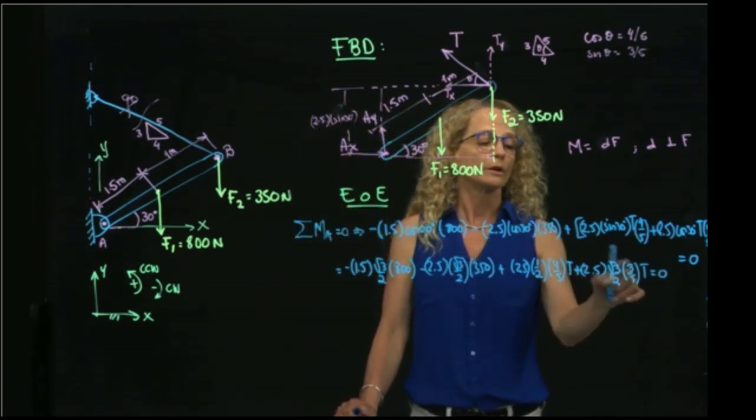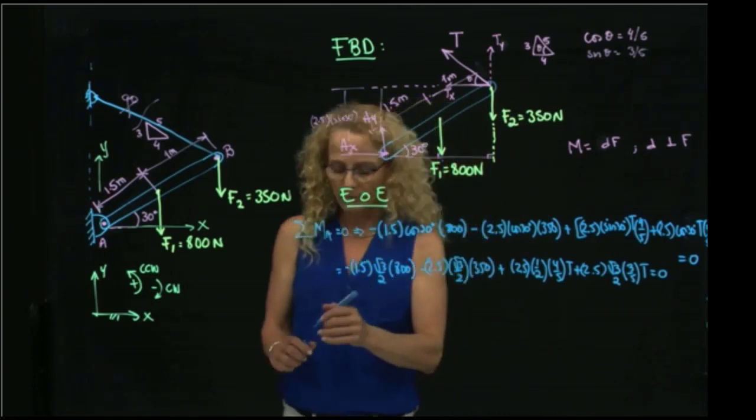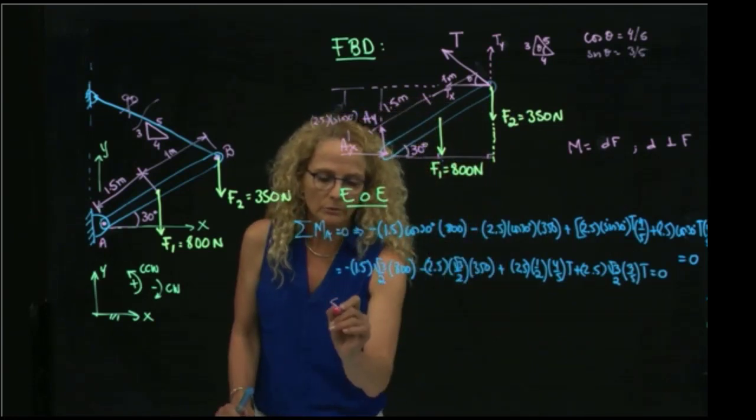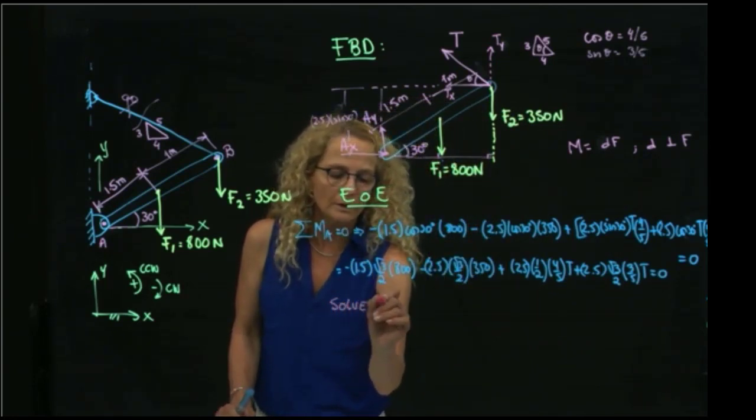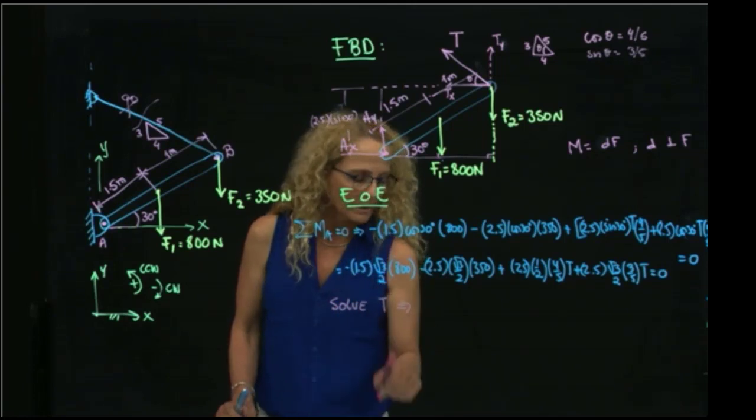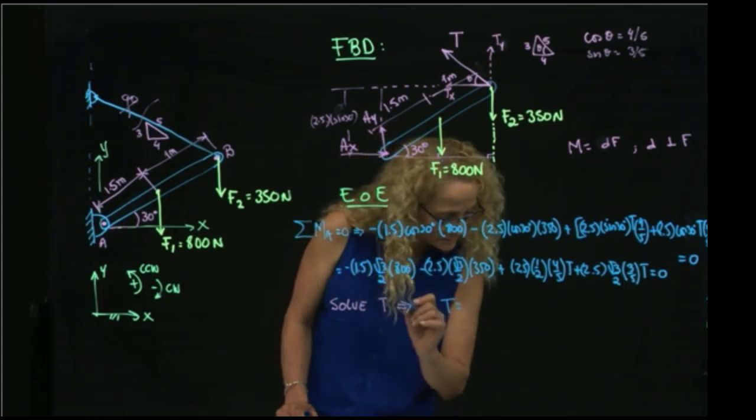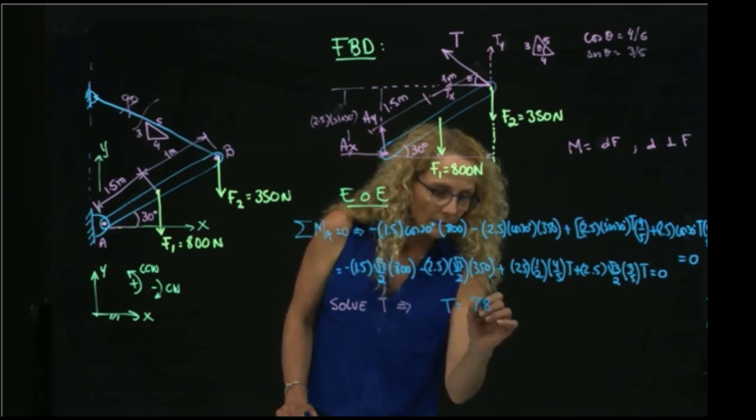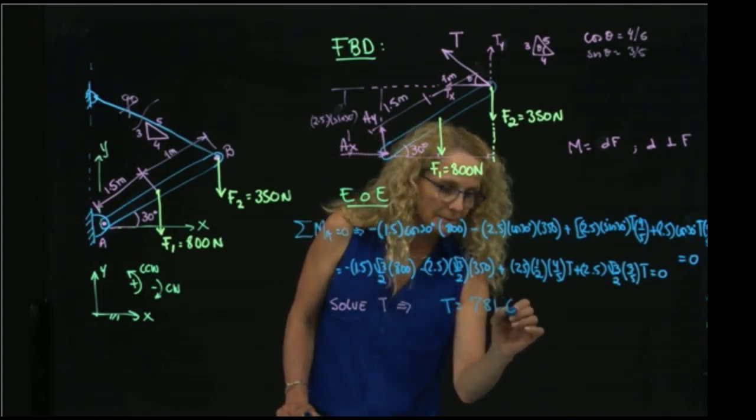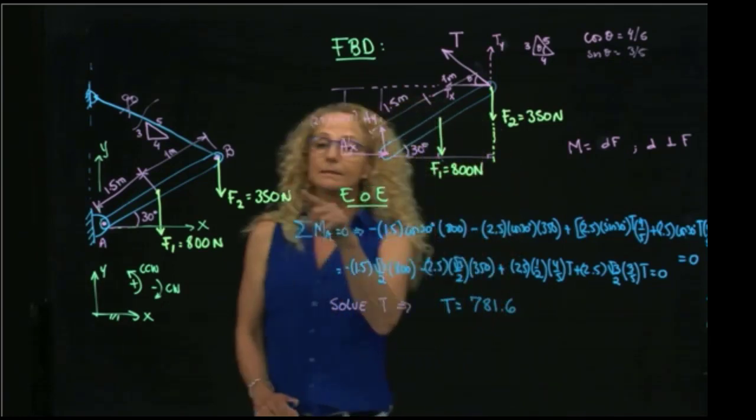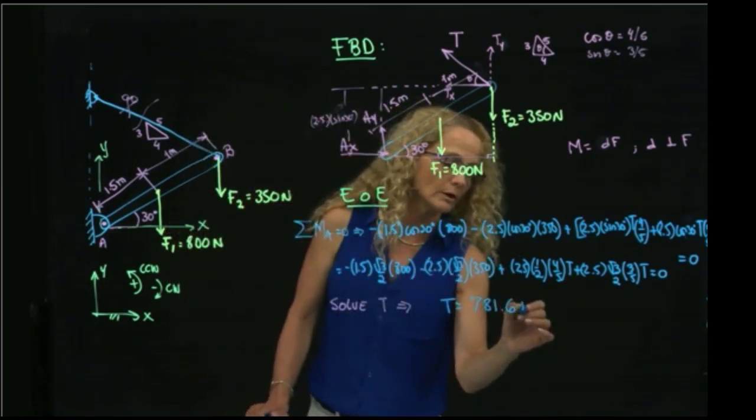My only unknown is the tension, so I can actually pull out the tension right here and solve for the tension. So I'm going to do that, solve for T, and I get that the tension is equal to 781.6. And since these forces were newtons, my units are newtons.